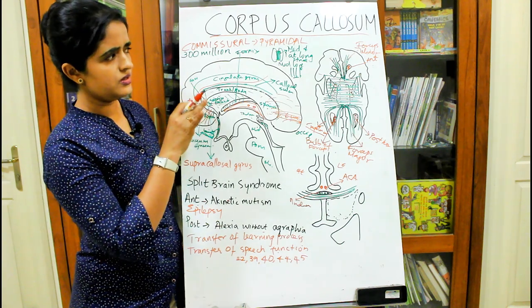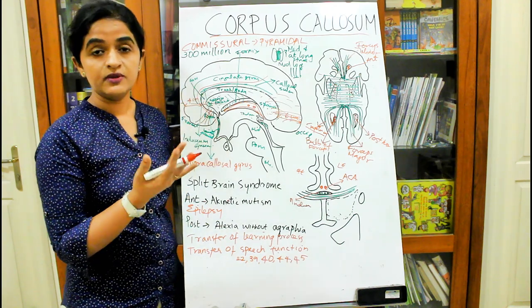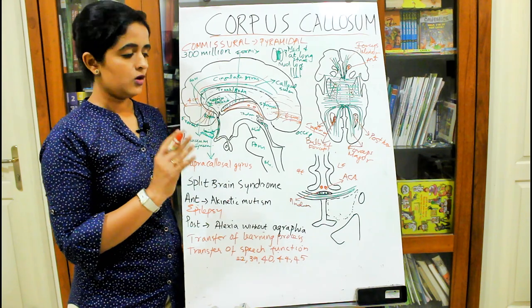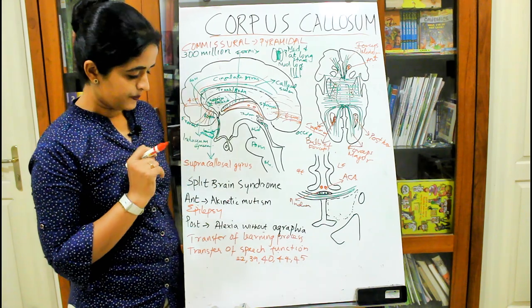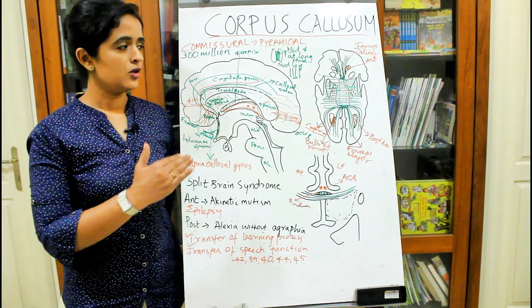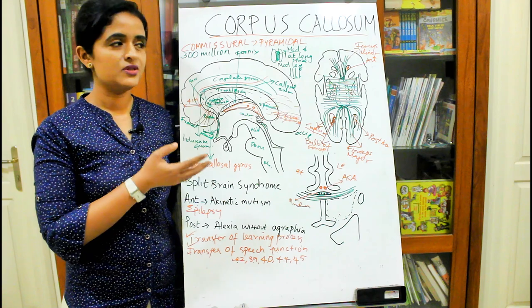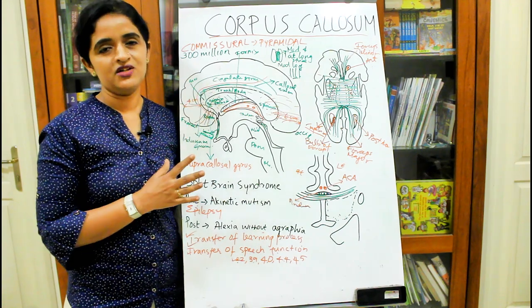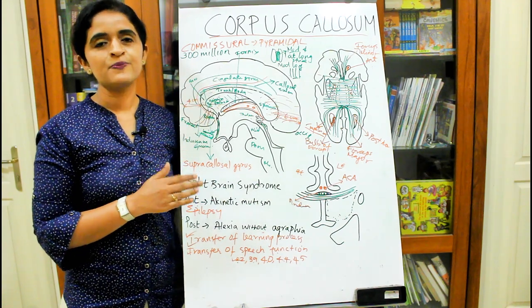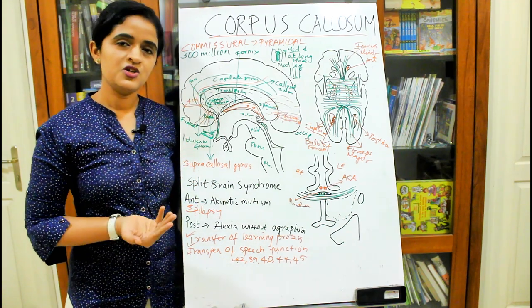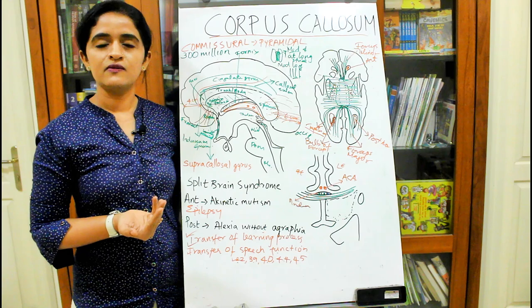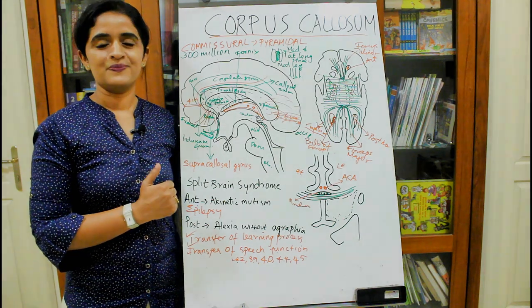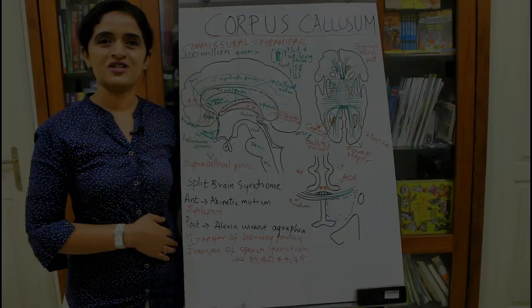This is how we have the fibers radiating from the corpus callosum. That covers the parts of corpus callosum and the pattern of fiber radiation. In the next session, we will be dealing with the functions of corpus callosum. Thanks for watching.